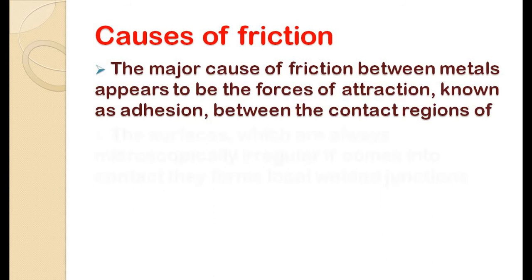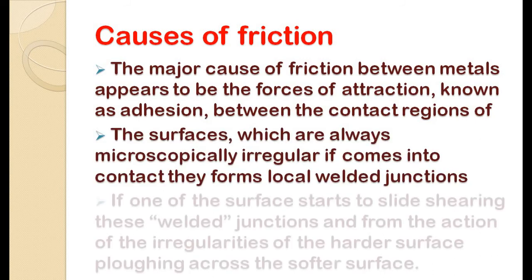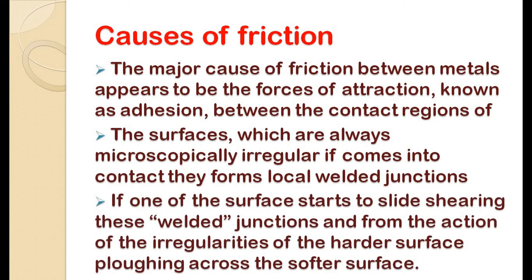Friction between solid surfaces can be overcome by reducing the roughness of the surfaces. One of the common methods to do that is by lubrication. Lubricants reduce the roughness and thereby the friction between the two surfaces. That is why we put lubricant in door joints, car engines, etc. If you want to get more detailed information about lubricants and lubrication methods and its types, please watch my other videos on both the topics.